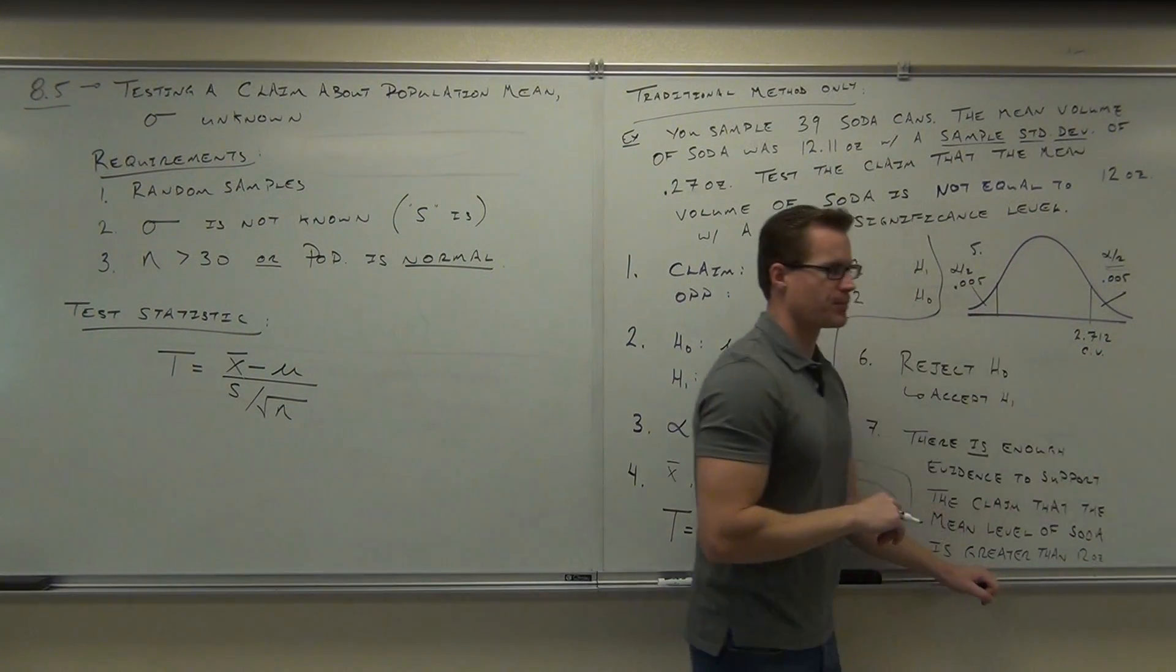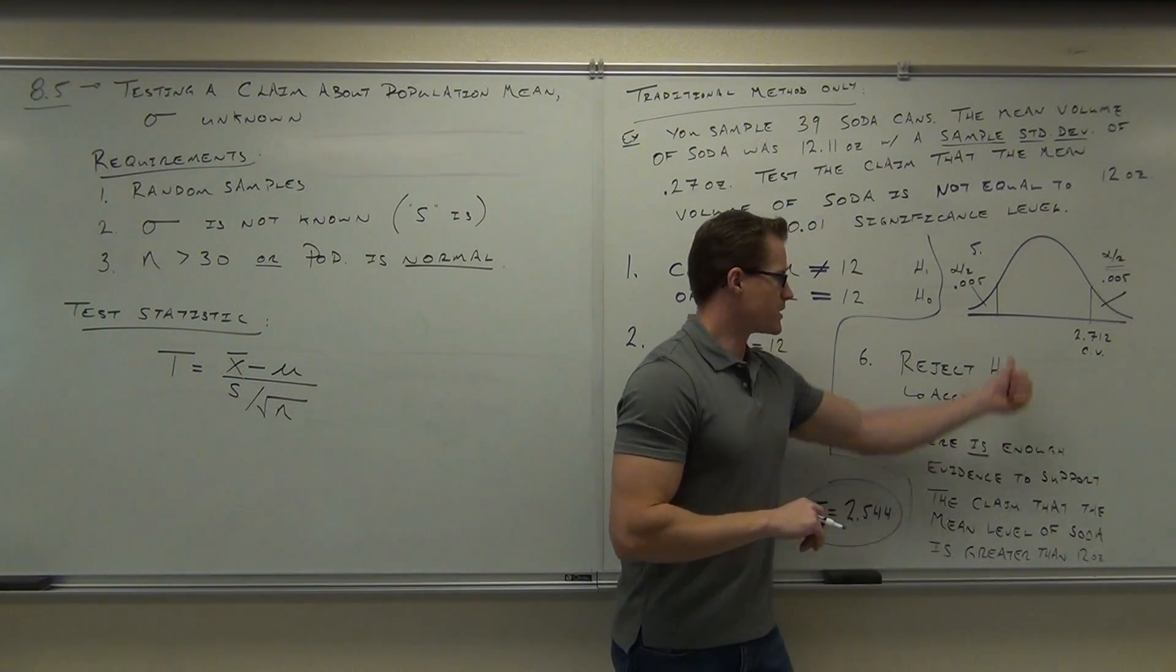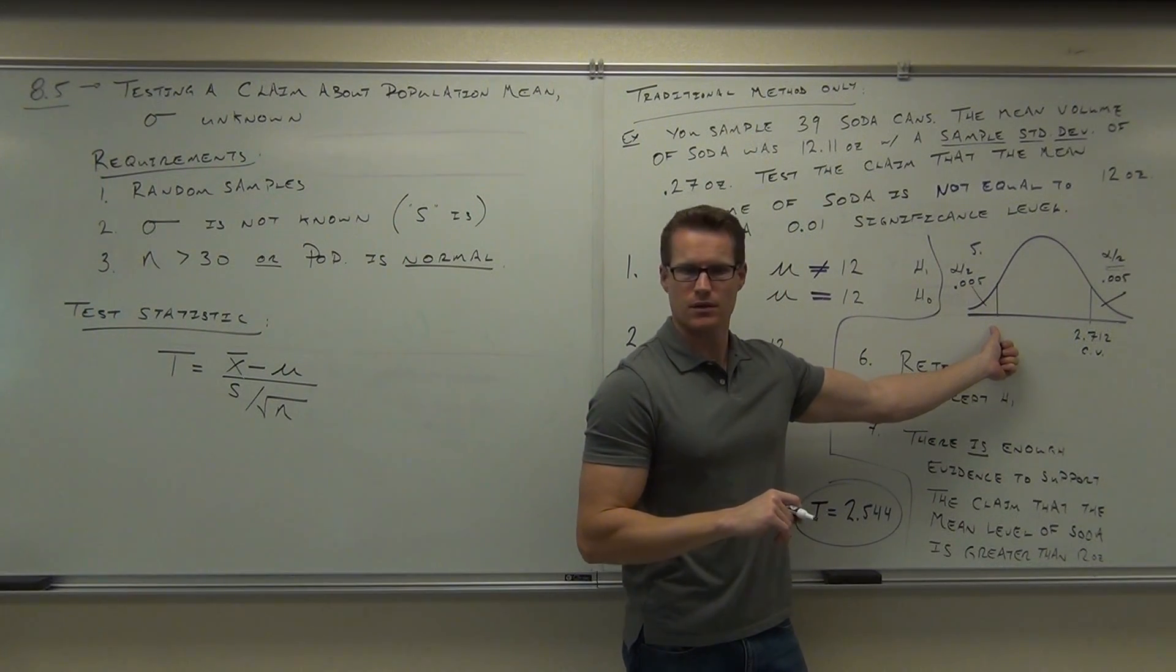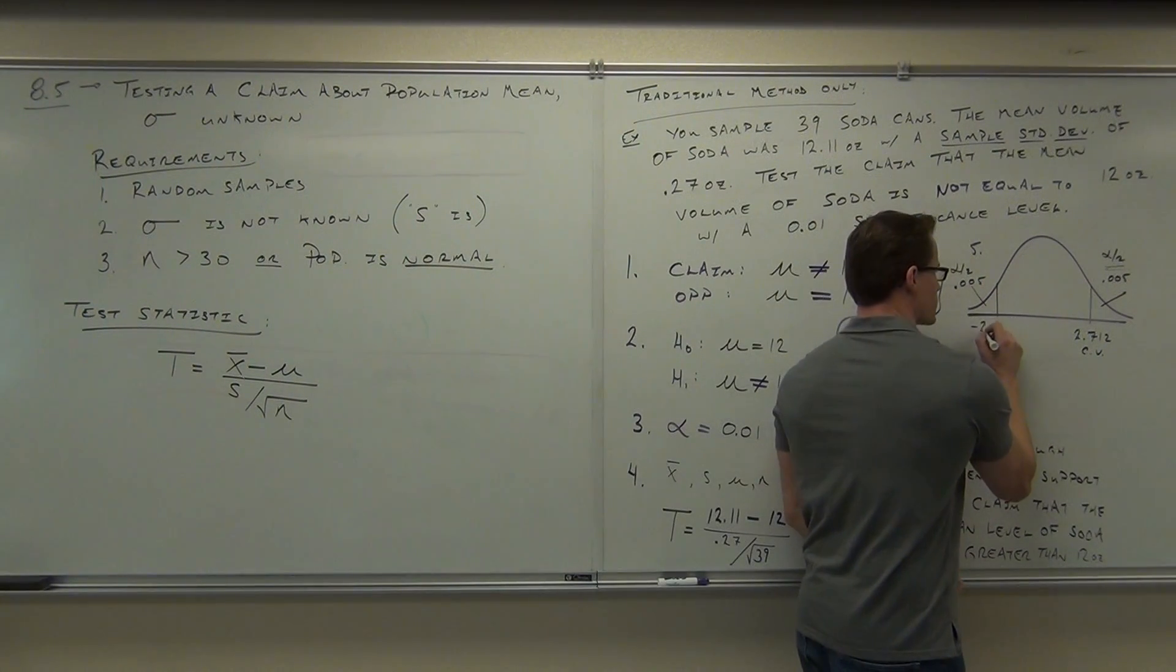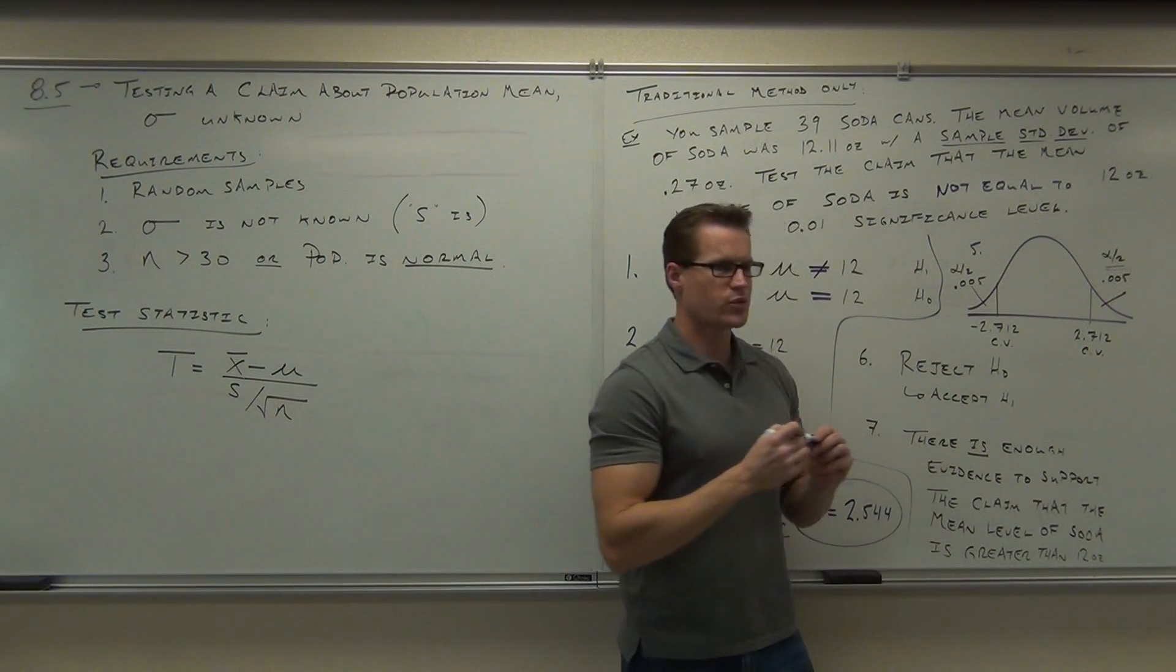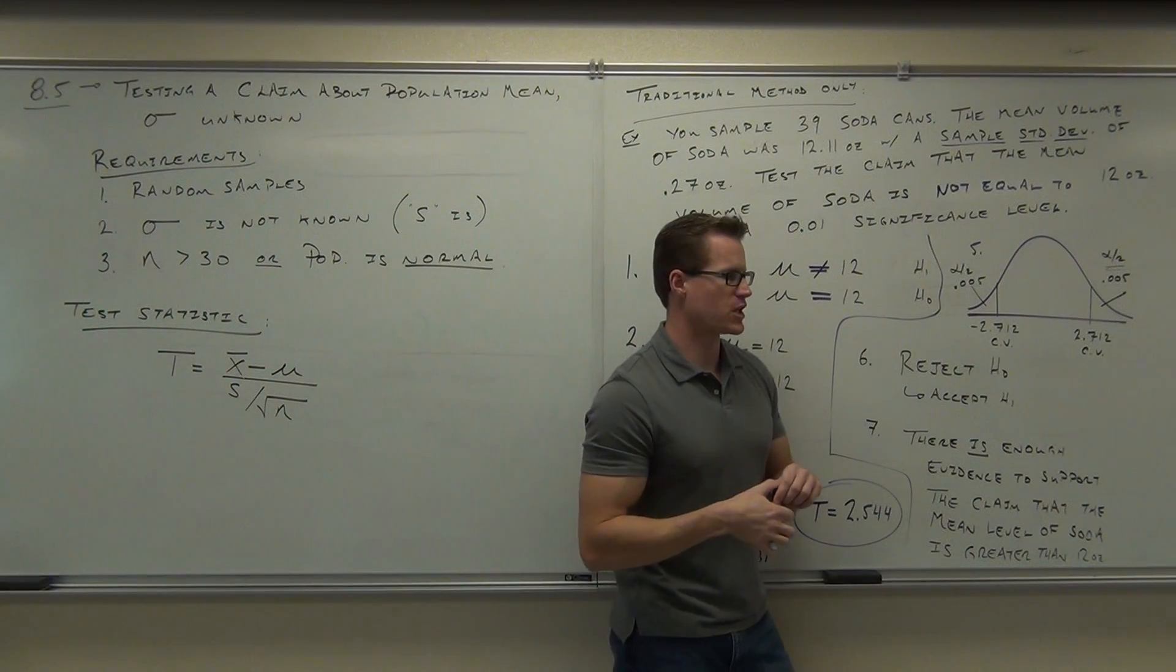Again, that's a critical value. What's this? 2.712. Yeah, it's symmetrical. That makes it kind of nice, doesn't it?